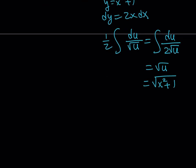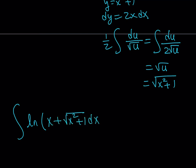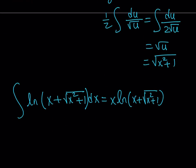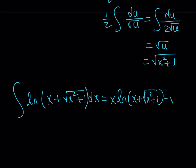When we put it together, we were trying to integrate ln of x plus the square root of x squared plus 1, dx. The result is x times ln of x plus the square root of x squared plus 1, minus the square root of x squared plus 1, plus the constant c. And that concludes this problem.